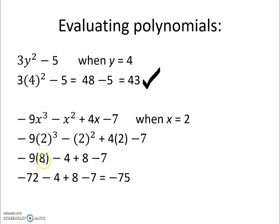Negative 9 times 8 is that 72 again, so we have a negative 72 minus 4 plus 8 minus 7. And that is a negative 75. So this polynomial evaluated when x equals 2 is a negative 75.